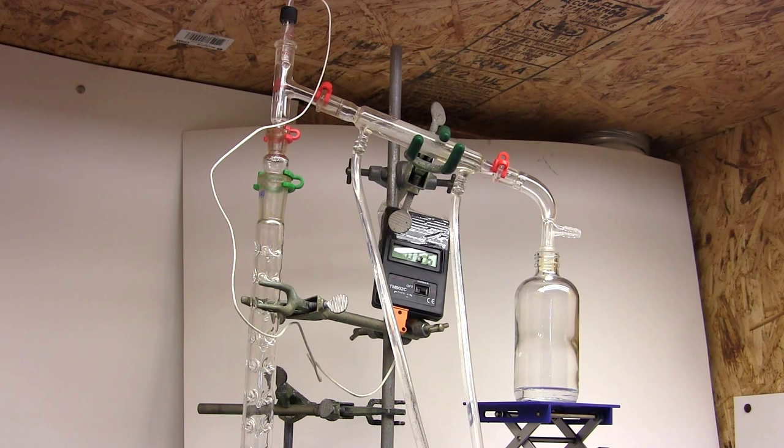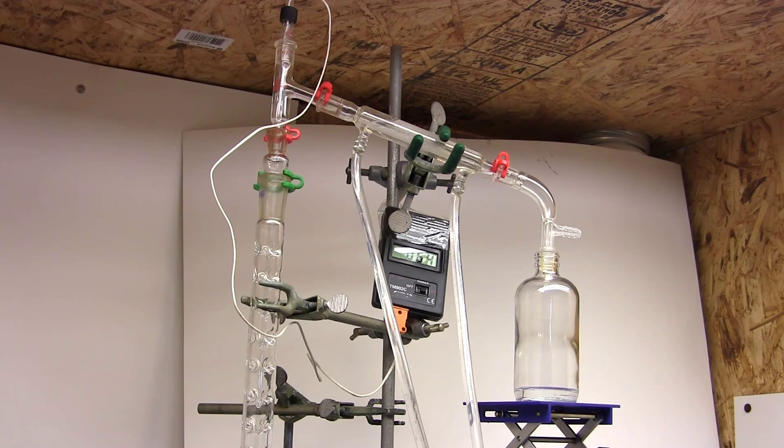But sometimes the properties of the component are such that it's very easy to overload the column and not get good separation. Now if I played with the heating I might find that spot in between no condensation and overloading where I get good separation. But because the best heating spot keeps moving as the composition of the source flask keeps changing, I'm not going to bother.